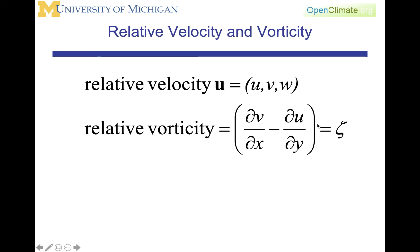We'll go back to our definitions. The relative velocity is u, v, and w. The relative vorticity is dv/dx minus du/dy, which is equal to zeta.